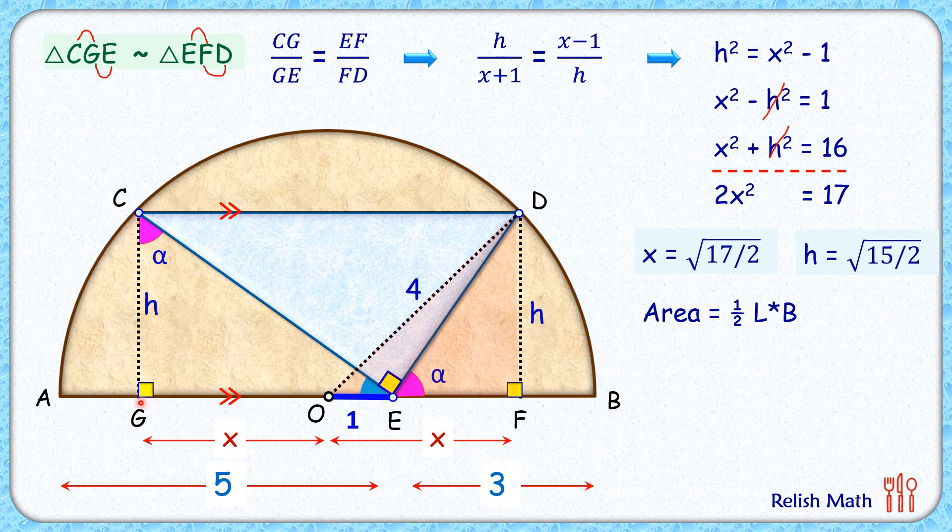Here length is GF and breadth is DF. And this GF is nothing but 2 times X and DF is h. So here 2 will get cancelled both sides, so area of triangle is nothing but X times h. Simplifying it we'll get area of triangle as square root of 255 by 2 centimeter square, and that's our answer.